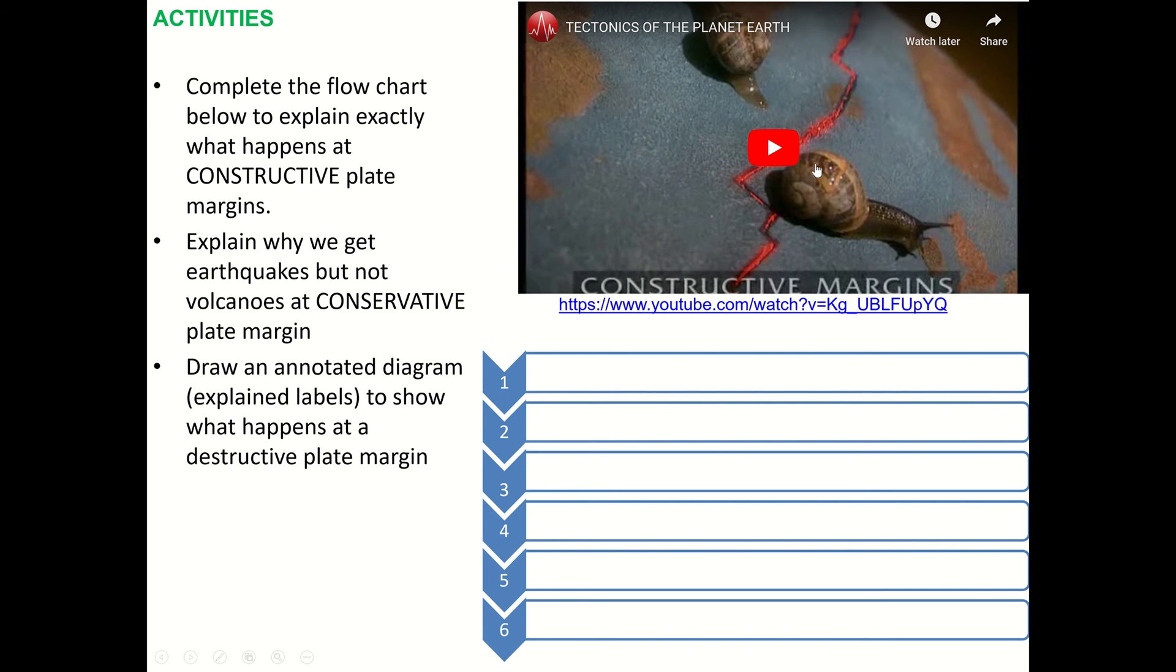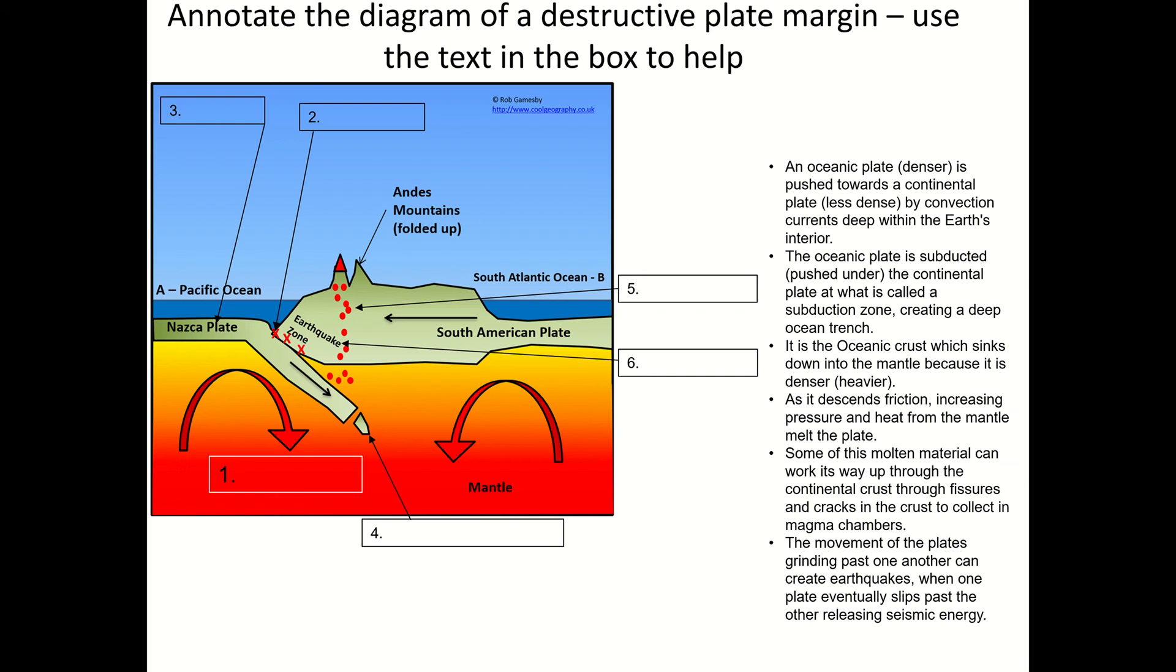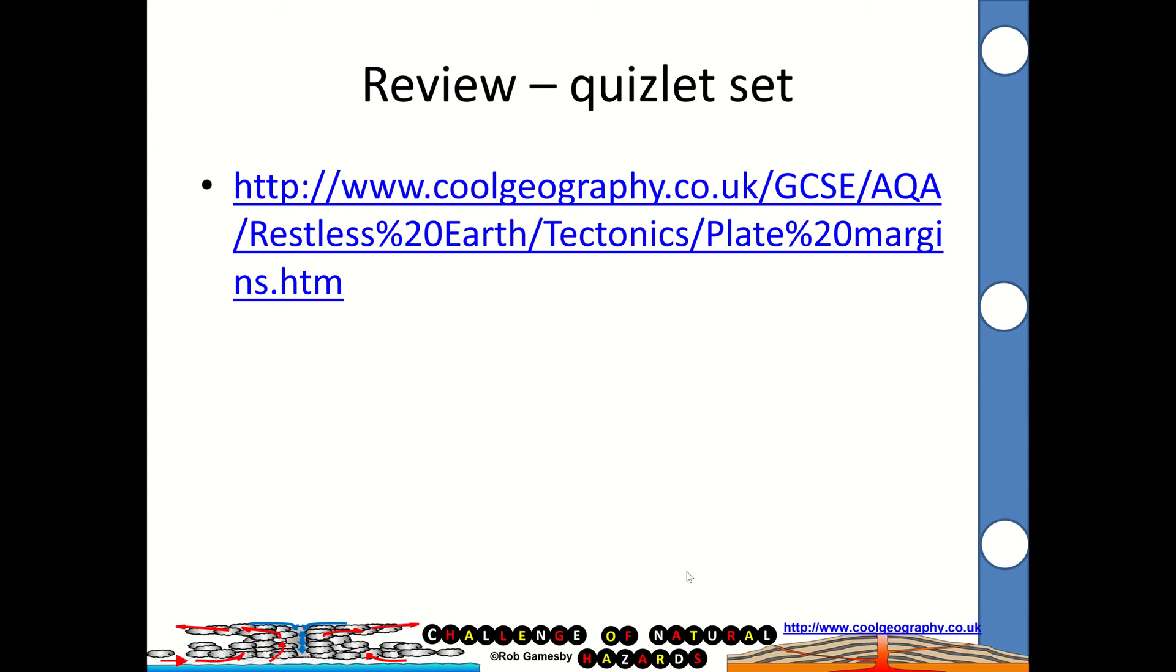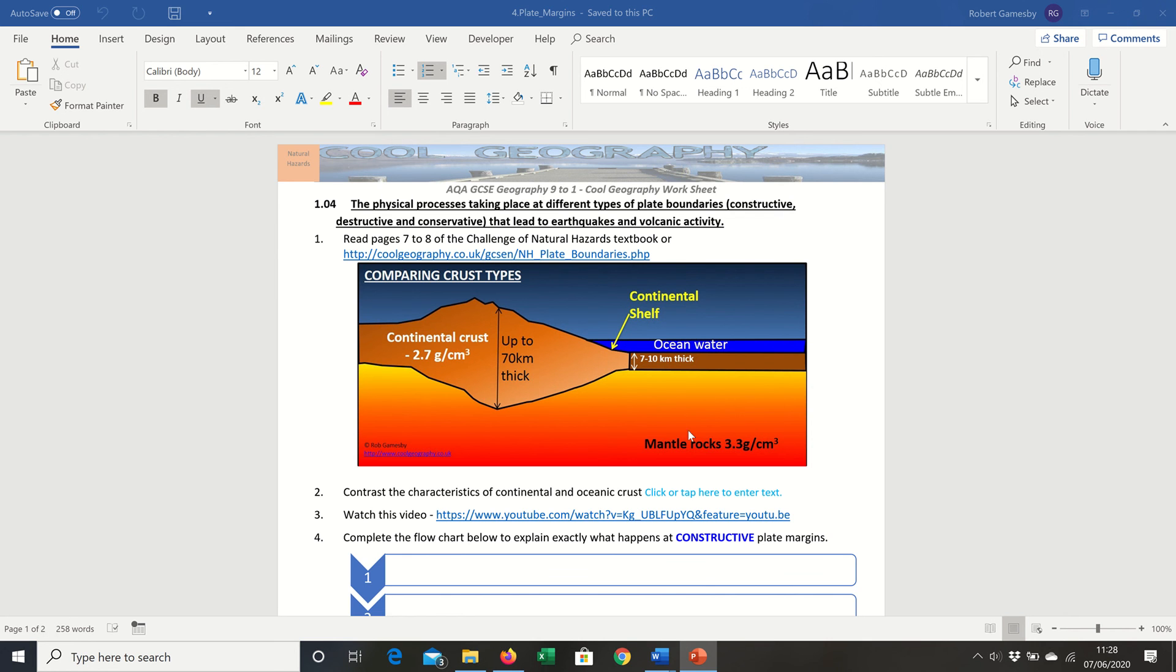So, tasks-wise, you've got a video to watch, watch it right through, complete the flowchart about what's going on in constructive plate margins, explain why we get earthquakes but not volcanoes at conservative plate margins, and draw an annotated diagram to show what happens at a destructive plate margin. So, I'll show you that on there. You've got the labels as well for the destructive plate margin, and you can have a go at that Quizlet set.